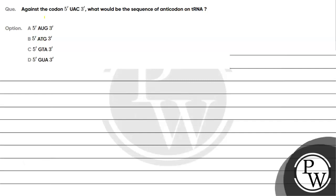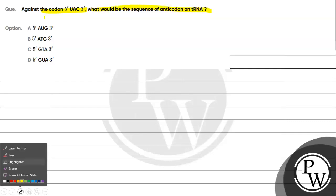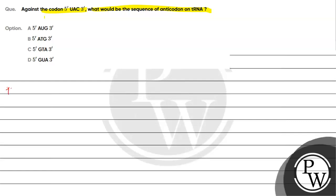Let's read this question. The question says: against the codon 5' UAC 3', what would be the sequence of the anticodon on tRNA? The key concept for this question is base pairing. So we have the codon 5' UAC 3'.